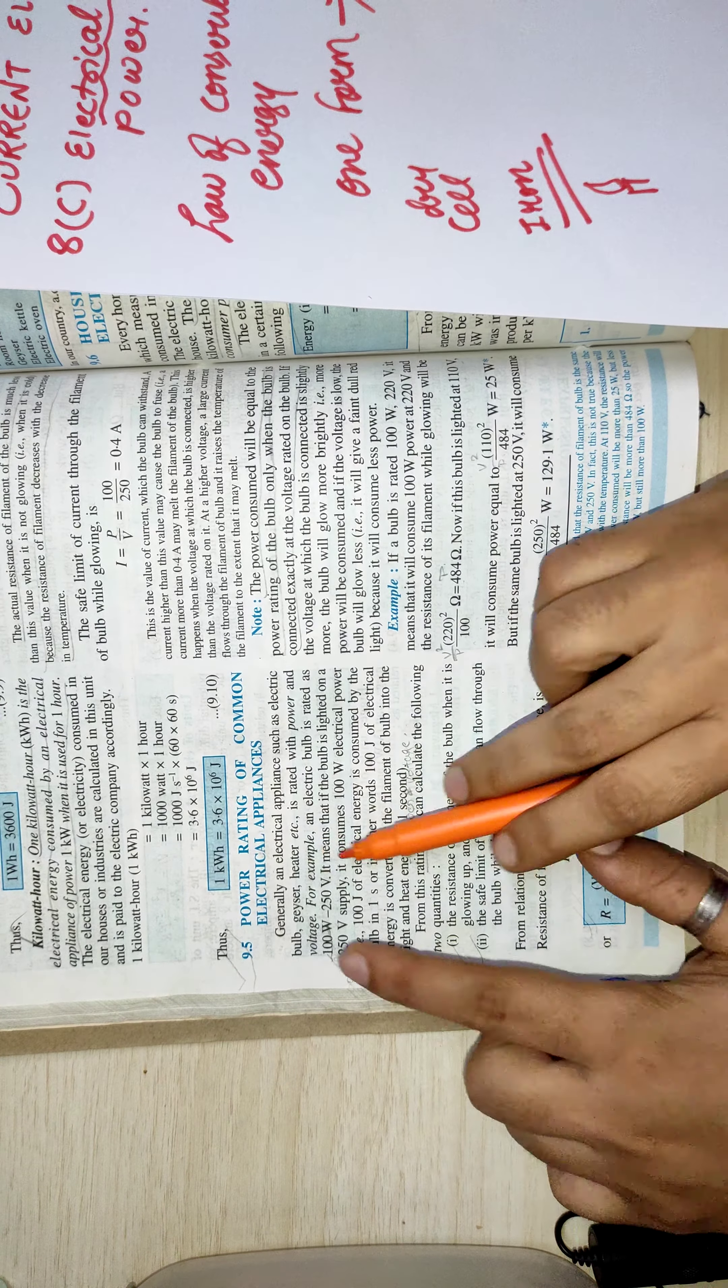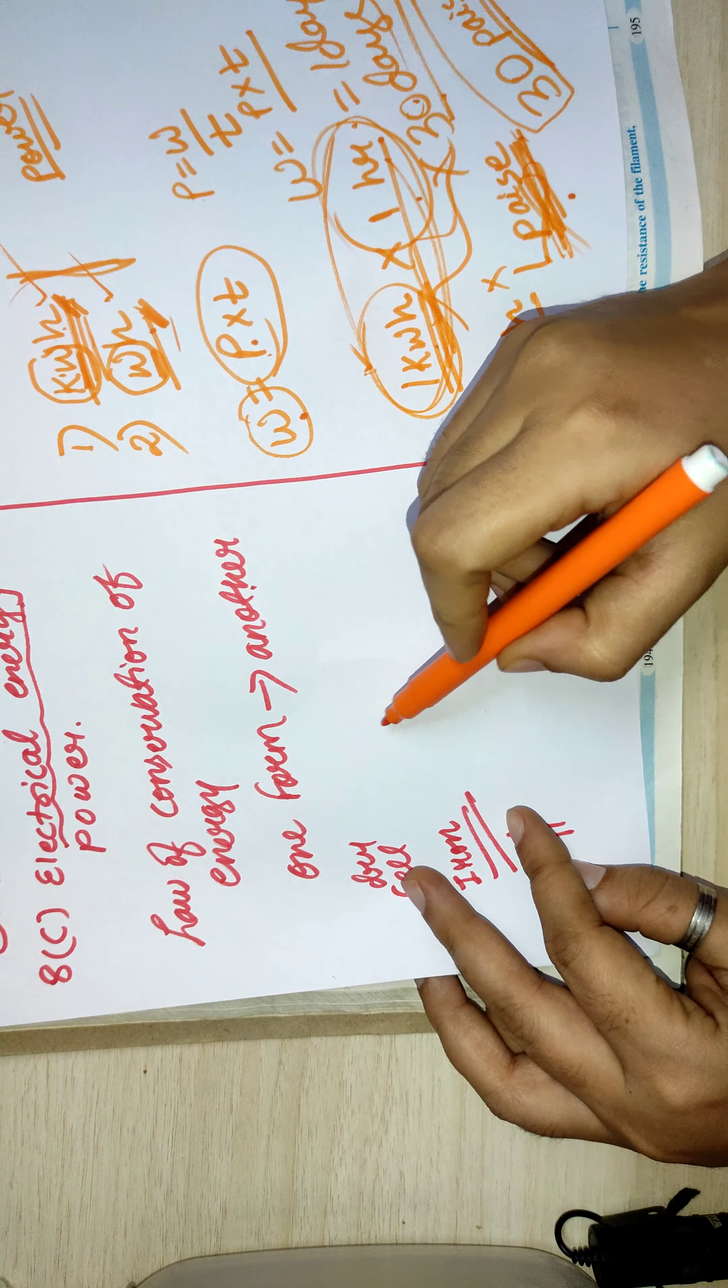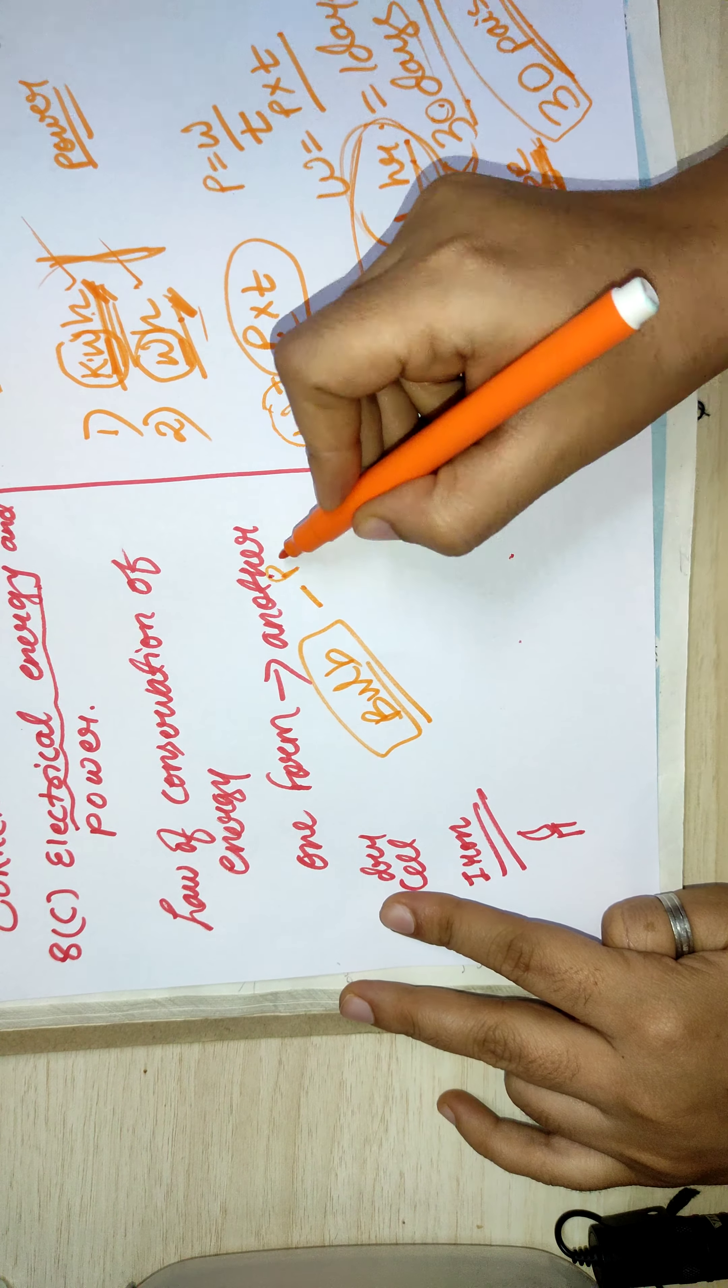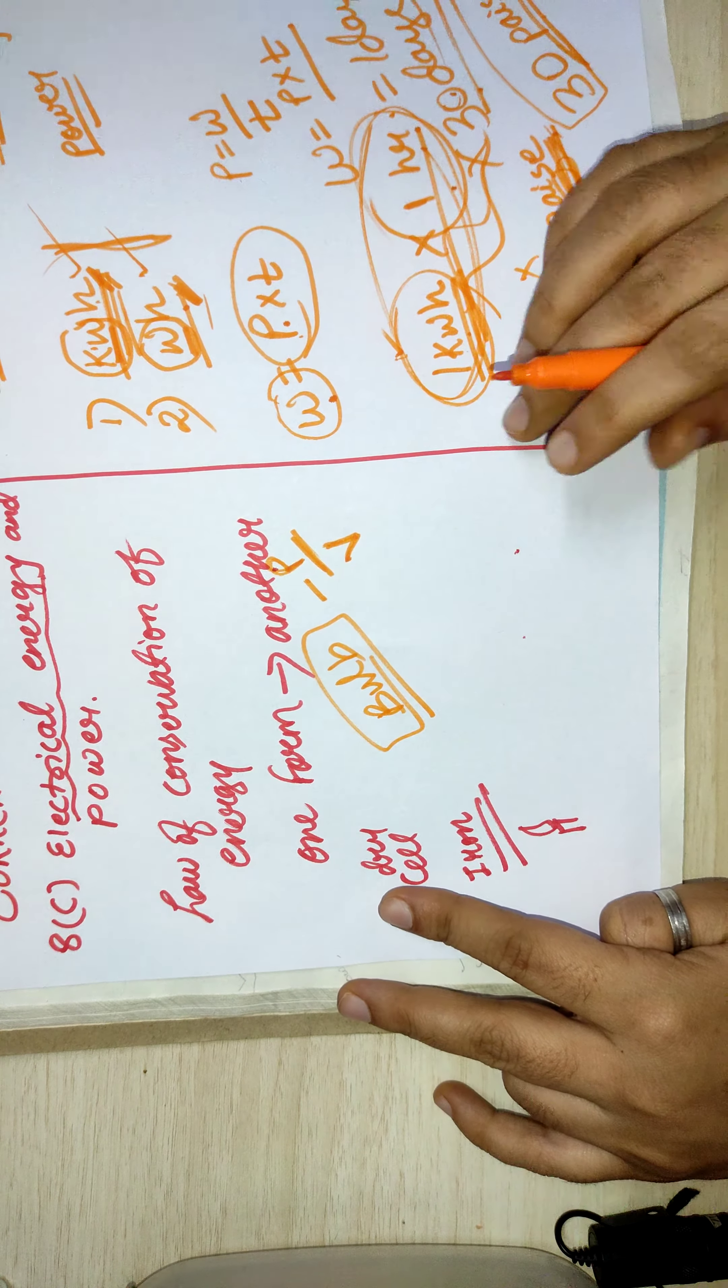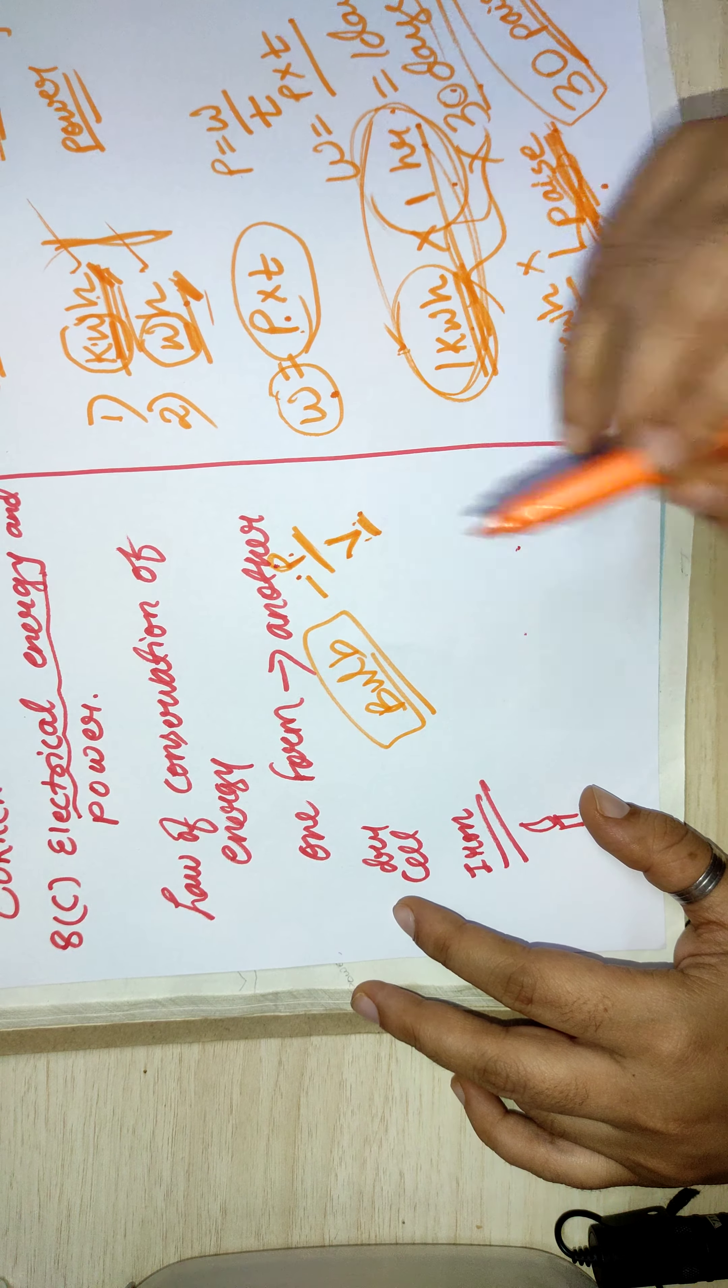Here you can see power ratings of common electrical appliances. Generally, whenever you take any electrical appliance, suppose there is a bulb, that bulb has two ratings. One indicates the power and one rating indicates the voltage at which the bulb will consume this much power. These two ratings, power rating and voltage rating, are given on the bulb.